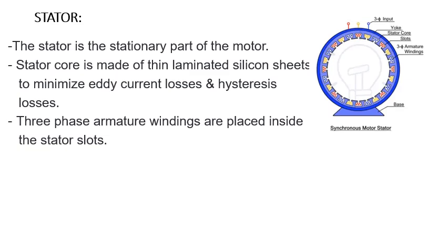Another important thing is that we laminate the stator core. We provide laminations to reduce the eddy current losses. If we use silicon steel sheets, it will also reduce the hysteresis losses. These are the iron losses. So laminations are provided to reduce eddy current losses, and silicon steel reduces the hysteresis losses. These are the major things associated with the stator.